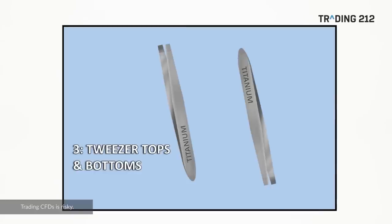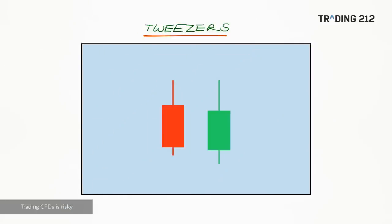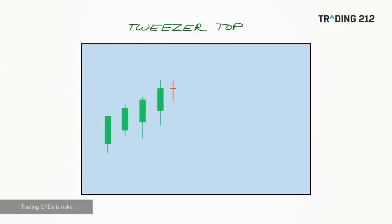Pattern number three: tweezer tops and bottoms. The defining element is matching highs or matching lows, so the pattern looks like a pair of tweezers. For tweezer tops you're looking for a rising market followed by those matching highs; a tweezer bottom is a falling market with matching lows. Tweezer tops and bottoms are reversal patterns, but not a vital reversal sign on their own — not as strong as engulfing. However, if the pattern comes after an extended move or occurs alongside other confirming candlestick patterns, it can take on greater importance, incorporating those single candlestick patterns from the previous video.